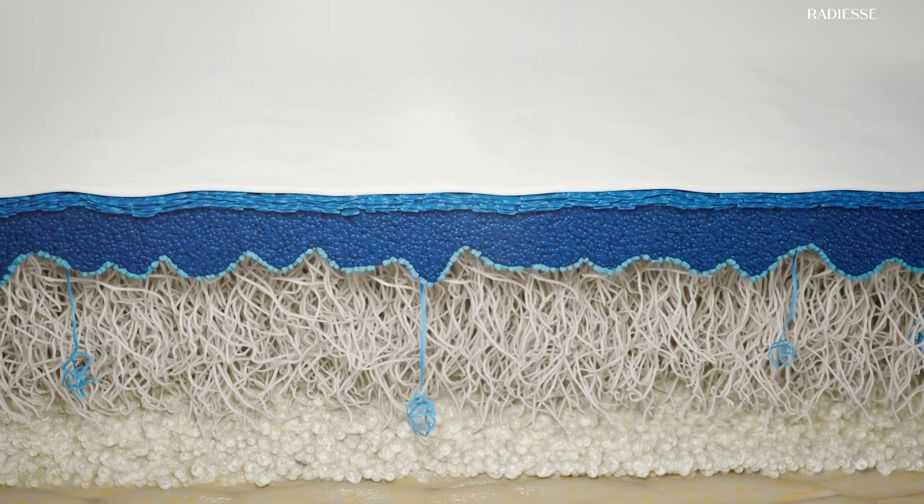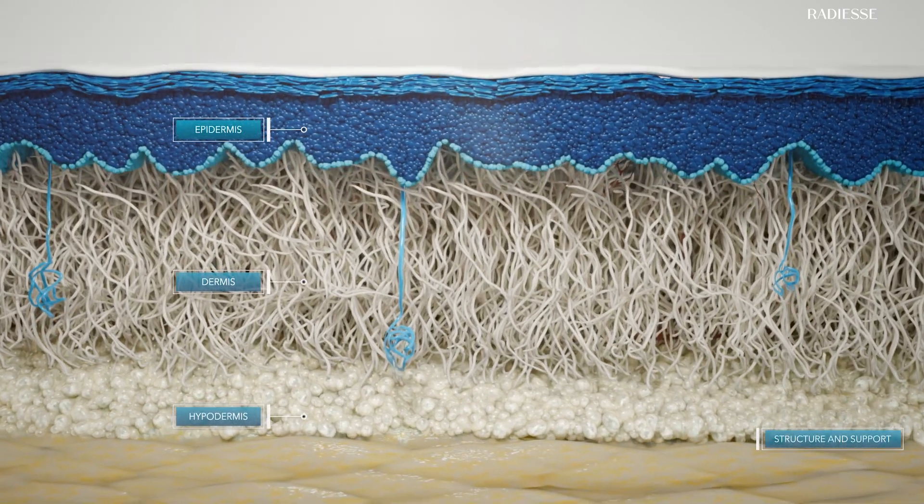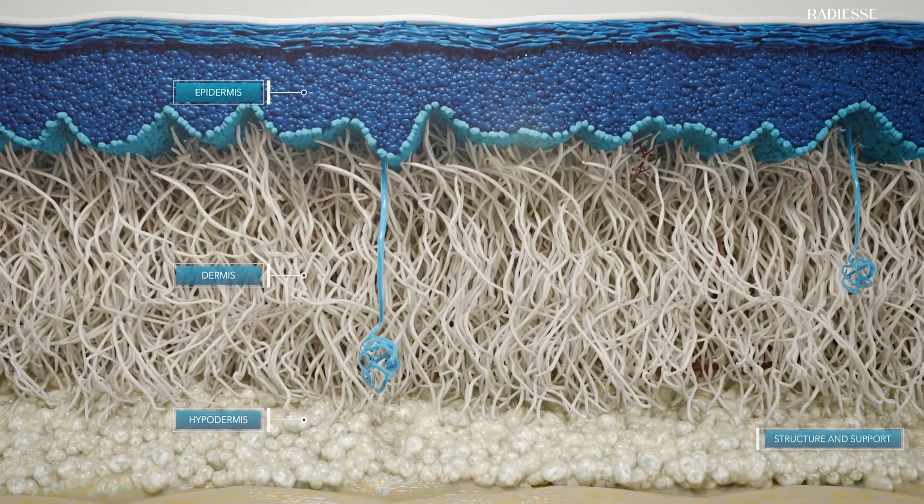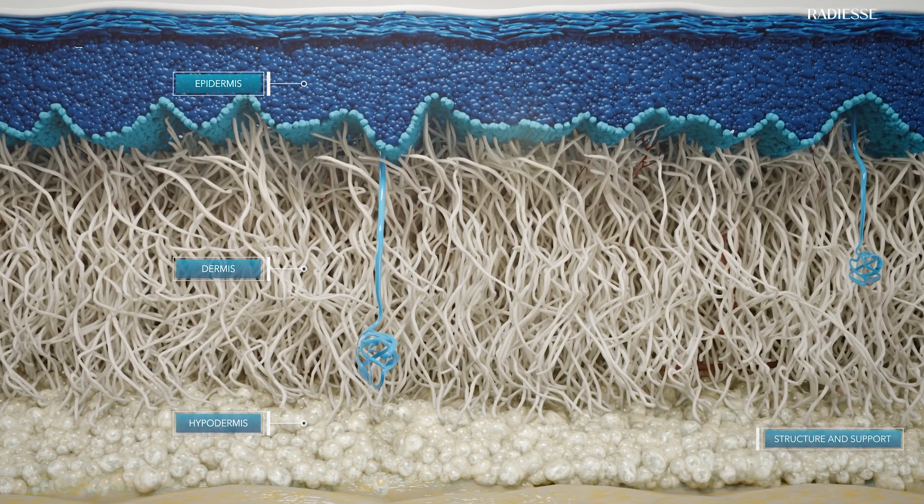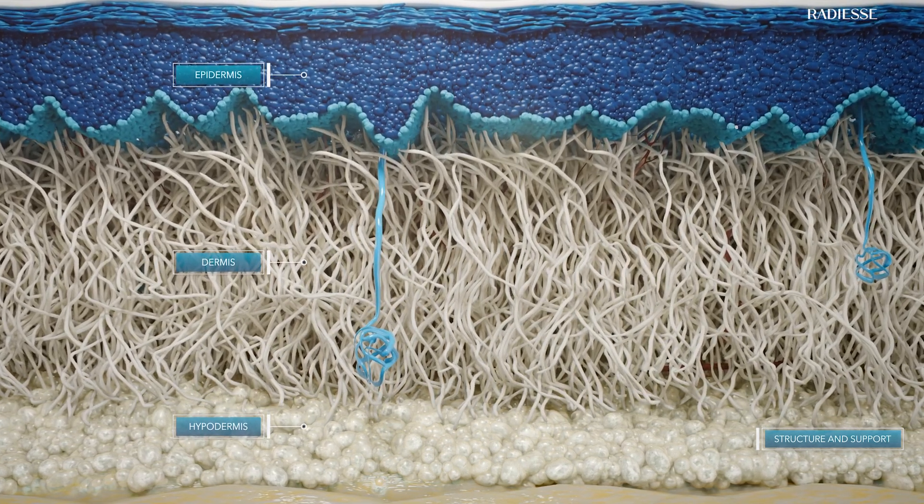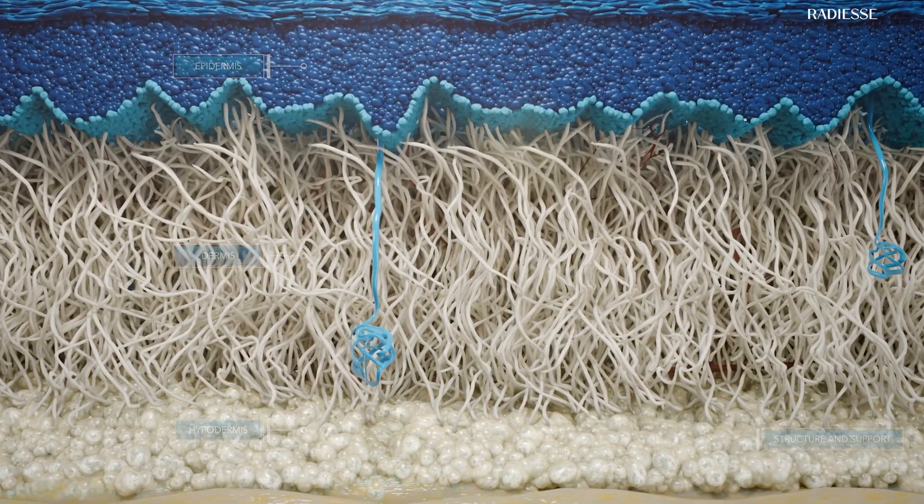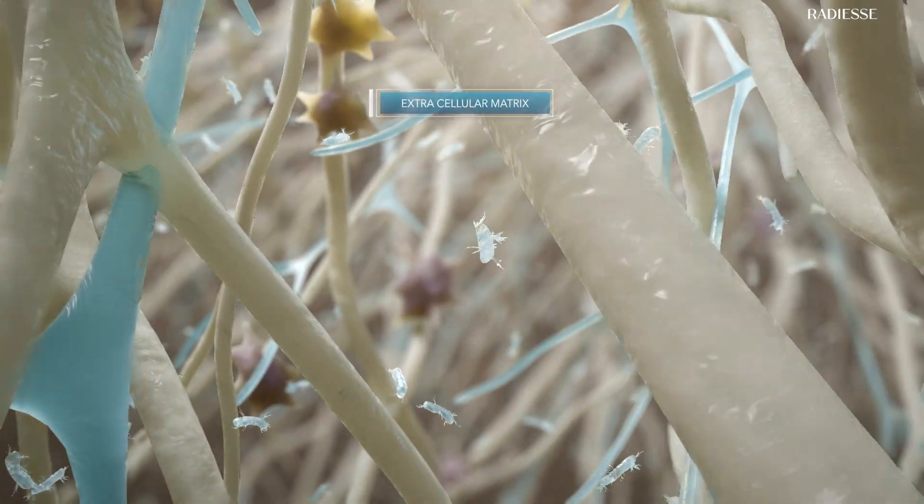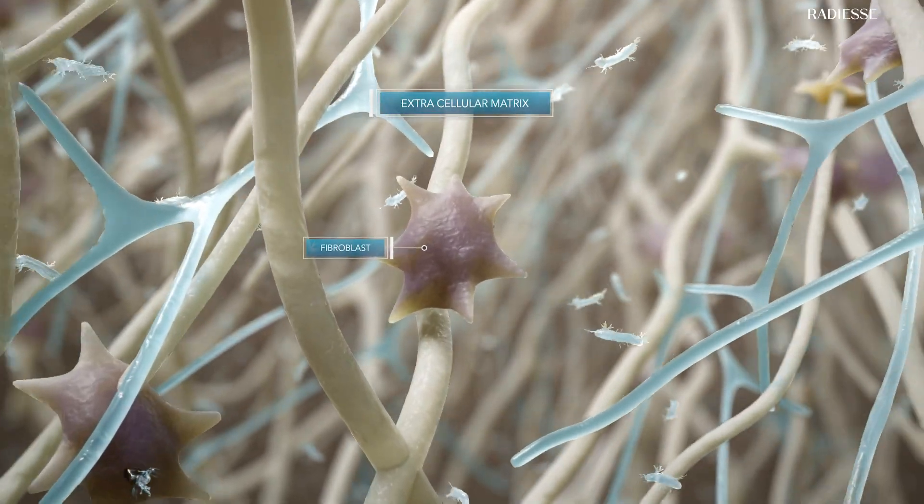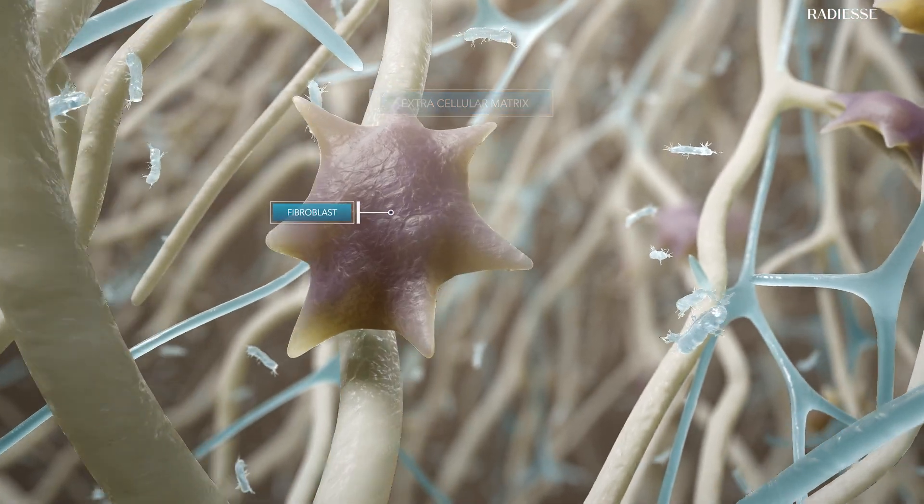Our skin is formed of three layers: the epidermis, dermis, and hypodermis. Skin structure and support, alongside strength and flexibility, is provided by the dermis, formed primarily of fibroblasts and extracellular matrix, or ECM.